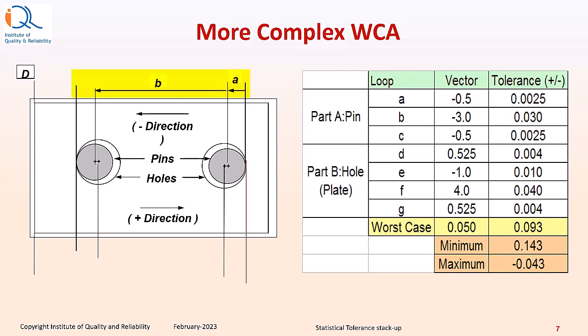Then we further move to the left by P which is the central distance between the pins, then the radius of the left side pin. Then D is the radius of the hole, then E is taking us to the left side face which is D face. From D face we move to F which is the center of the hole on the right side, and finally G is the radius of the hole. The calculations are shown in the table. We can see that the minimum value is plus 0.143 and the maximum value is minus 0.043.